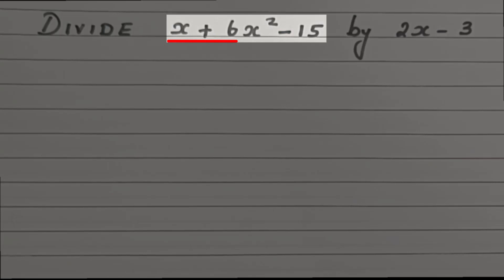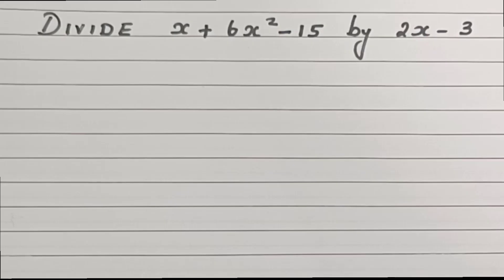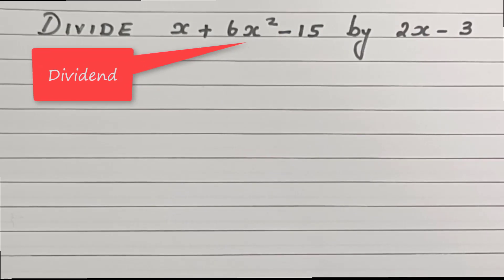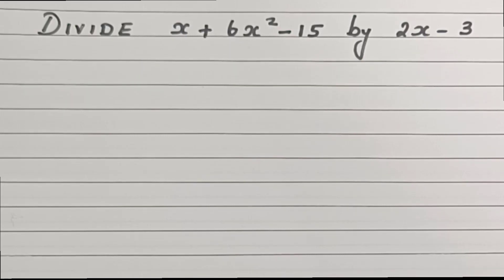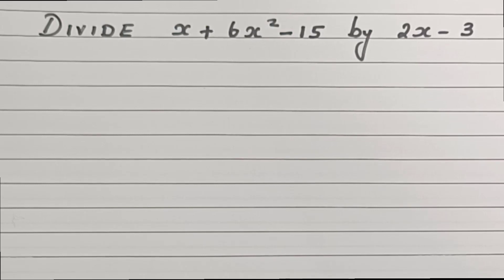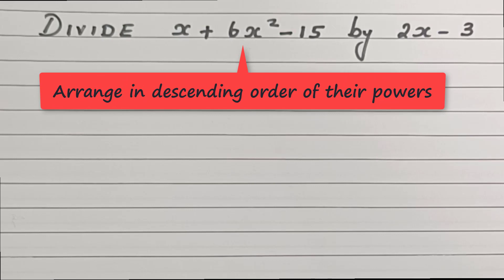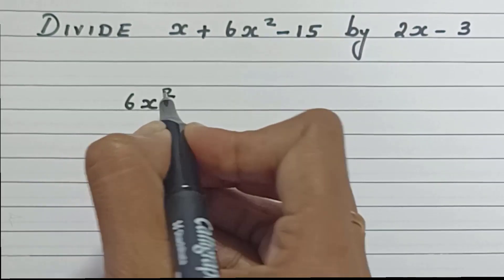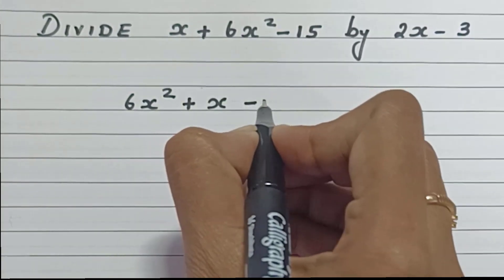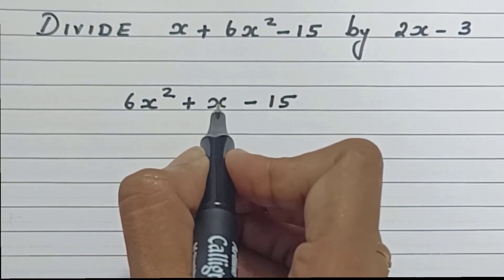Divide x plus 6x squared minus 15 by 2x minus 3. Here, x plus 6x squared minus 15 is the dividend and 2x minus 3 is the divisor. Before we start with the actual division, the very first step is to arrange the dividend in descending order of their powers. Here x squared is the highest power, so let's arrange: 6x squared plus x minus 15.